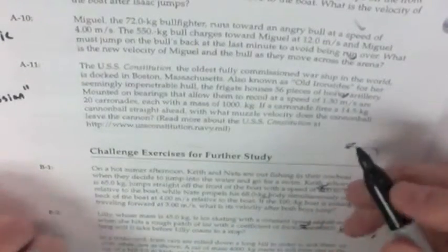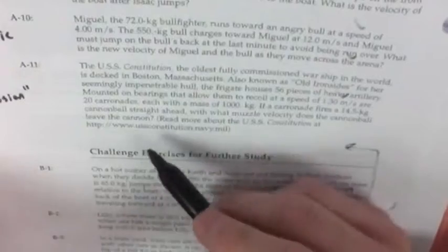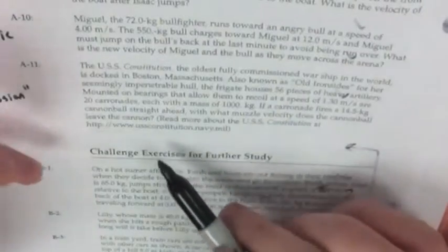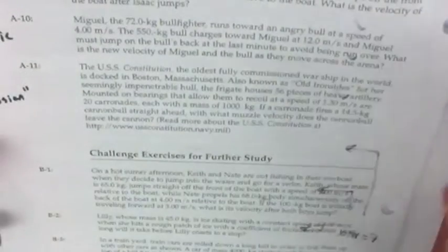If a carronade fires a 14.5 kilogram cannonball straight ahead, with what muzzle velocity, that's the speed that the cannonball comes out of the cannon, does the cannonball leave the cannon? You can read more about USS Constitution at that website. All right, I'm going to take this away so we can start rocking out the guess method.